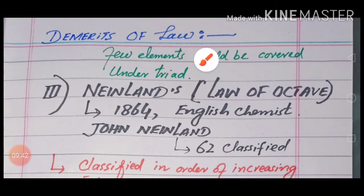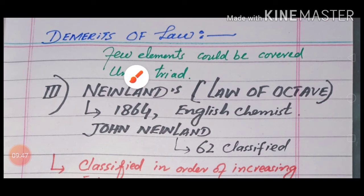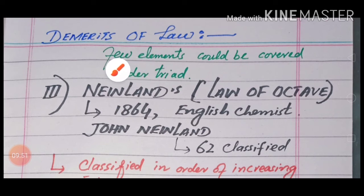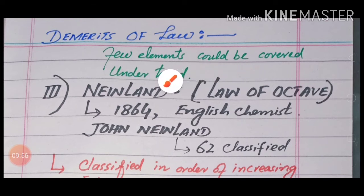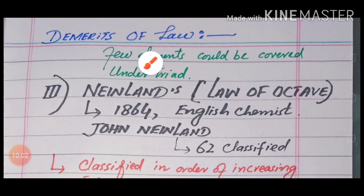The Law of Triads failed because it could only cover a few elements. As more elements were discovered later, this law did not apply to them, so it was considered unsuccessful.